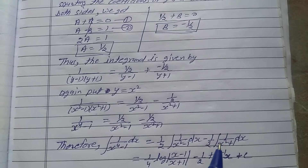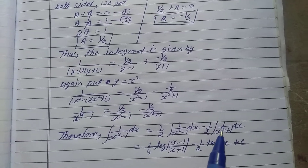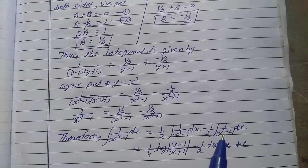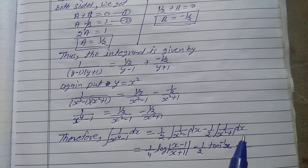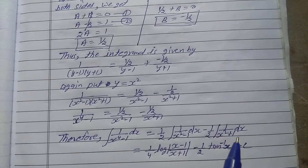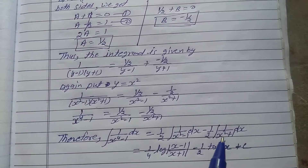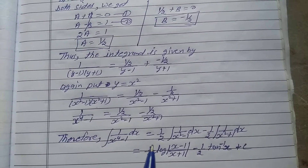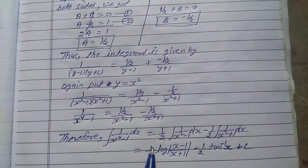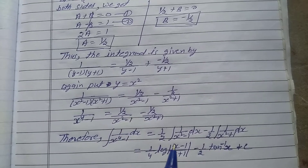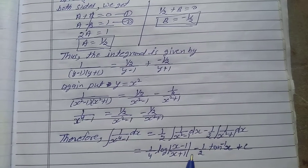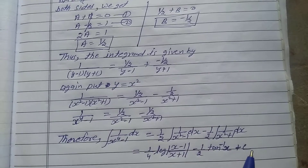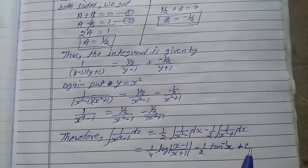For the second integral, the formula used is: integration of 1 upon x square plus 1 equals tan inverse x. Therefore, the final answer is 1 by 4 log mod of x minus 1 upon x plus 1 minus 1 by 2 tan inverse x plus C. That is the solution.